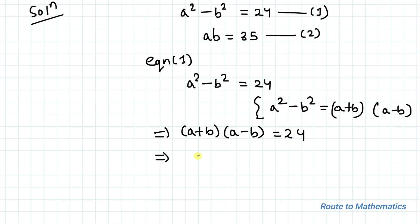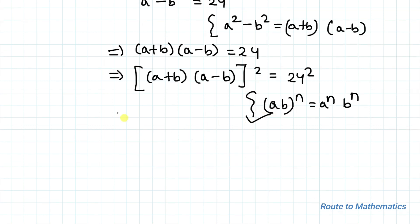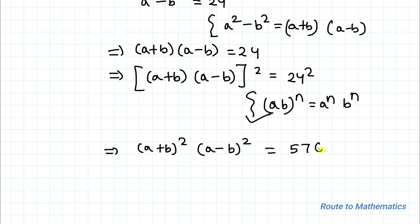In the next step, I will square both sides of the equation. So we have [(a+b)(a−b)]² equals 24². We have an exponential rule: (ab)ⁿ equals aⁿ times bⁿ. Applying this rule, we can write (a+b)² times (a−b)² equals 576.